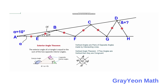Next we focus on triangle BEF. Triangle BEF is also an isosceles triangle, and in an isosceles triangle the angles opposite the two congruent sides have the same angle. Therefore angle BFE is also 2 alpha.